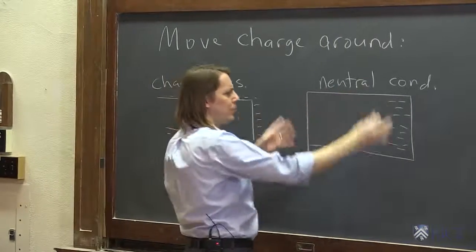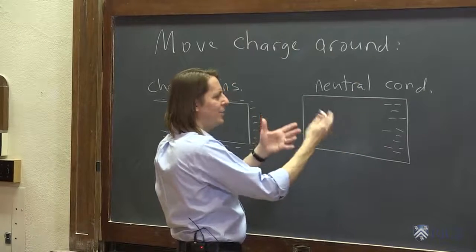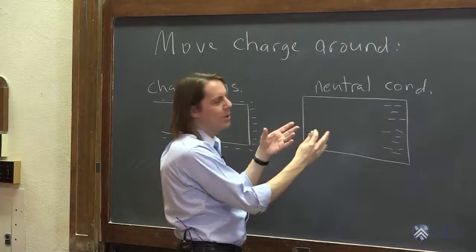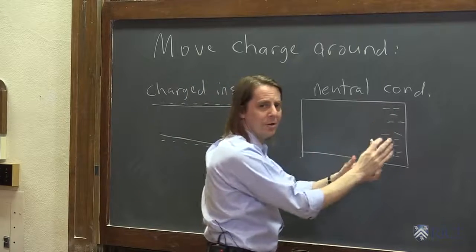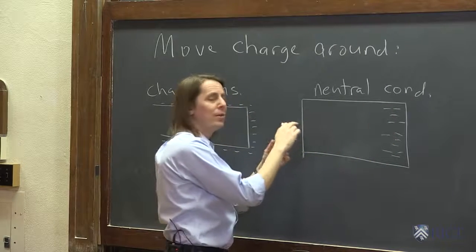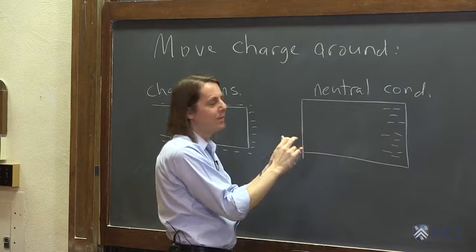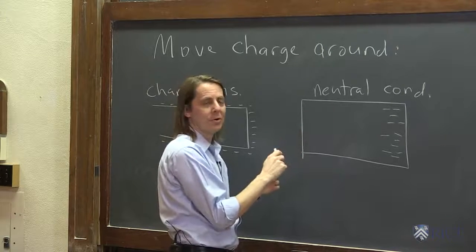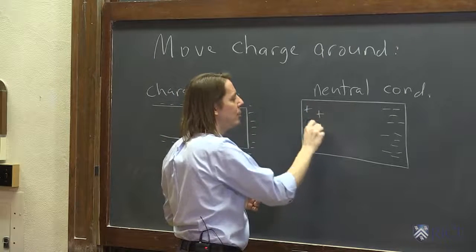Well, if this thing was neutral, all the atoms had the right number of electrons on them to stay neutral. But then some of the electrons went off and went over here. There must be some atoms over here that are missing their electrons and have one more proton than they do electron. So it's positive over here.